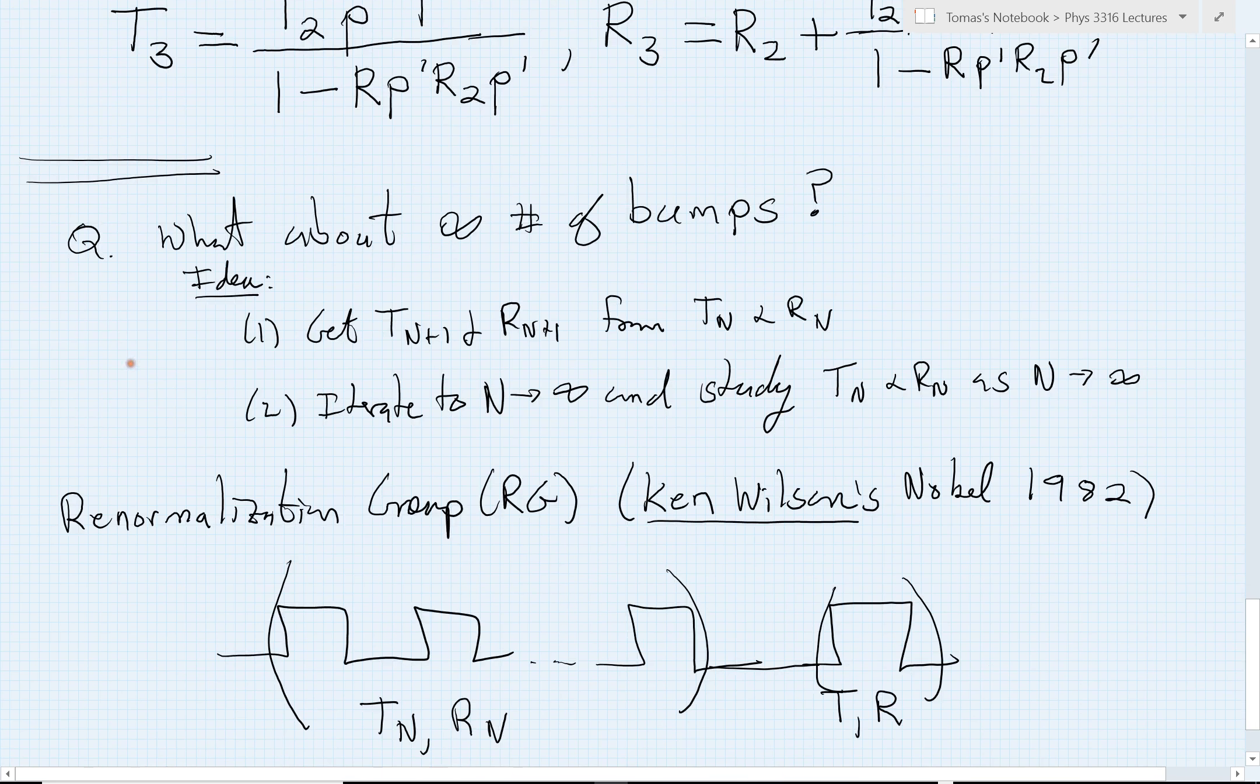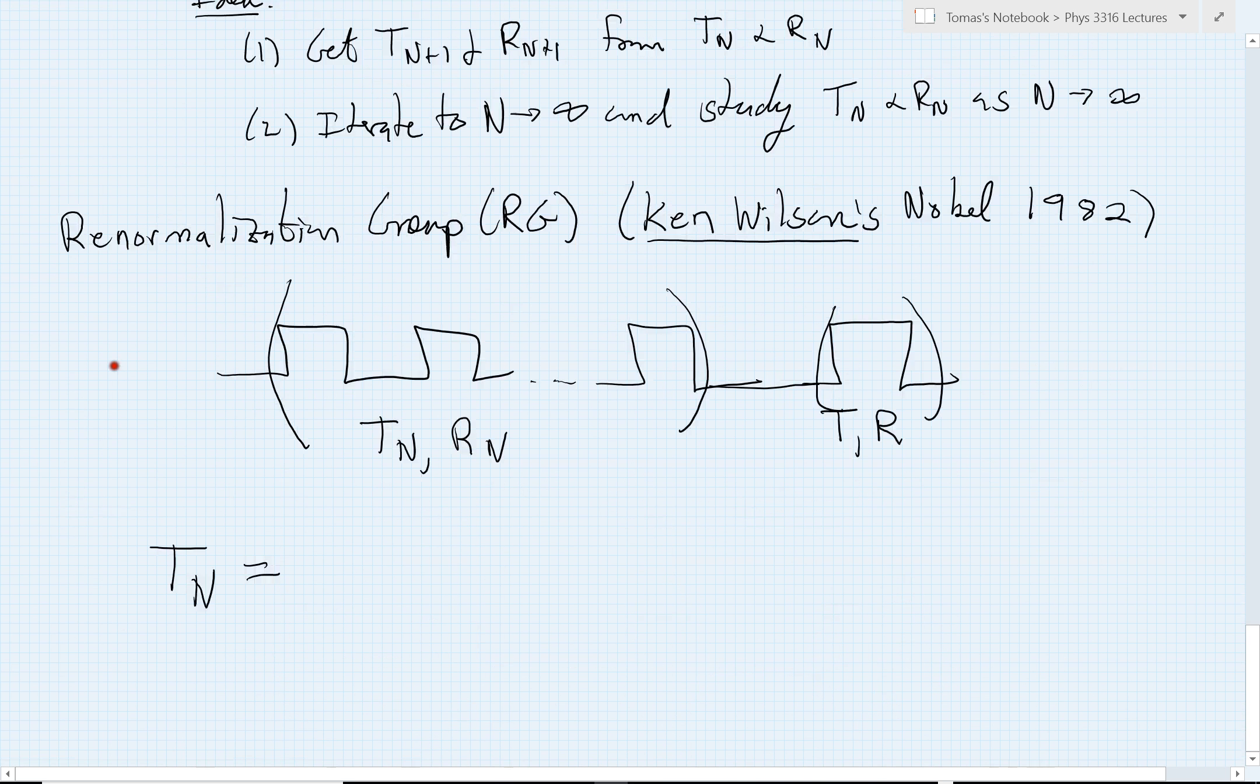You can repeat the argument for yourself if you want to double check. But T(n+1) then is going to be, well I'm sorry, T(n+1). The next one will be the simplest diagram, takes me across Tn, P prime, and through T, divided by 1 minus the ricochet, which is first reflect off of the far side, P prime, reflect off of the original n unit, and then the P prime.